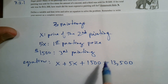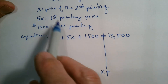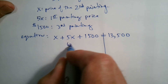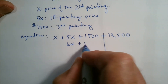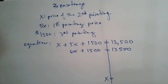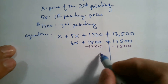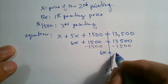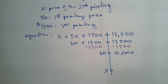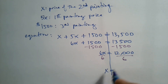Now I have my equation — let's solve for X. First, combine like terms: X and 5X is 6X, giving 6X + 1,500 = 13,500. Then subtract 1,500 from both sides, so 6X = 12,000. Finally, divide both sides by 6 to isolate X, and we get X = 2,000.